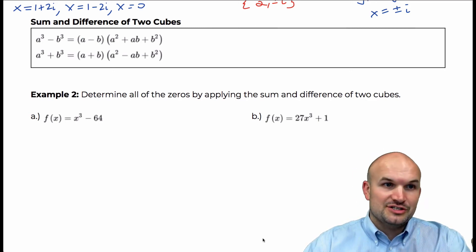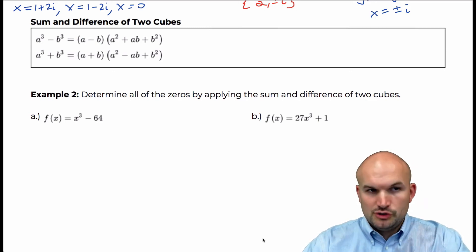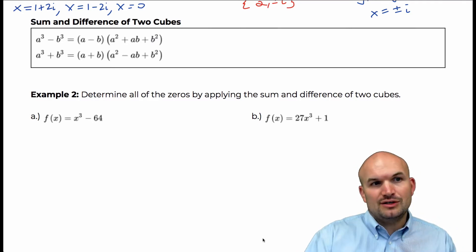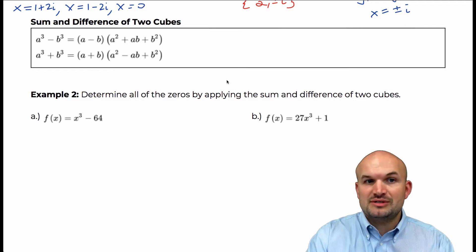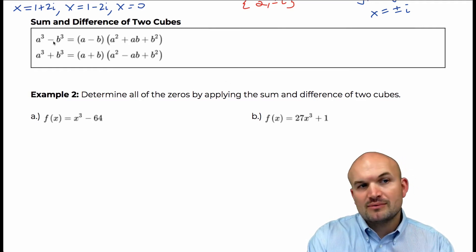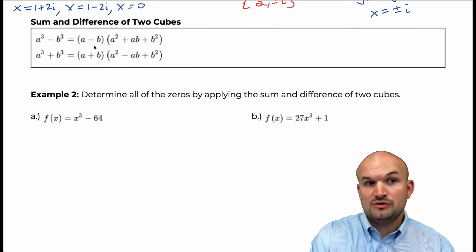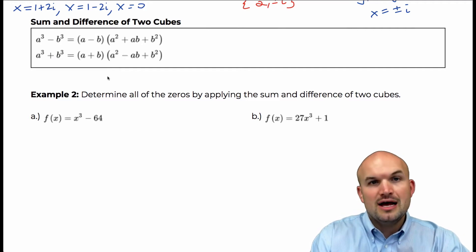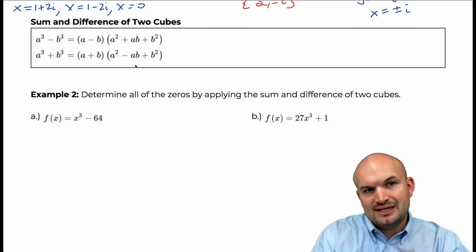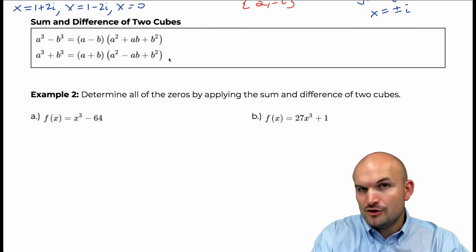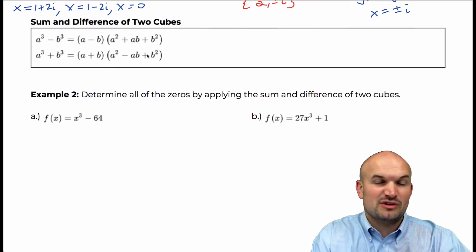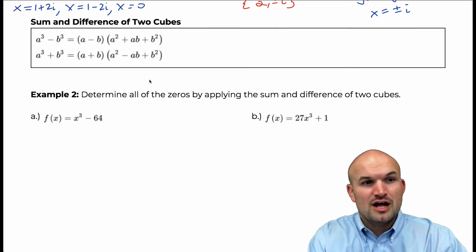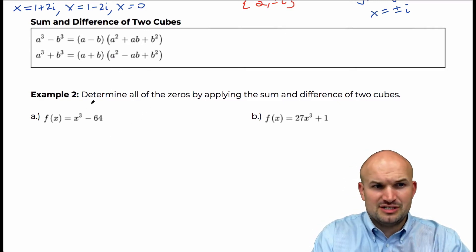Welcome. Now let's get into the sum and difference of two cubes. Previously we worked on finding zeros with factoring. Now we're going to look into finding the zeros with the sum and difference of two cubes. We can factor a sum and difference of two cubes, and then we're going to look into finding the zeros. The important thing is this quadratic trinomial is only going to provide complex solutions, so to find them we're going to have to use the quadratic formula.